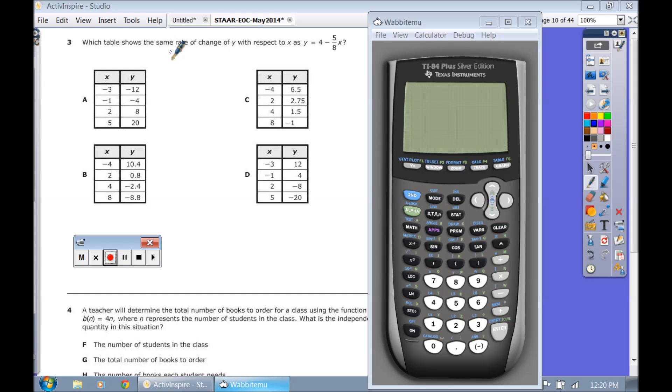This question was from the May 2014 Algebra 1 test. Question 3 was asking you which table shows the same rate of change or the slope, the same slope as the equation that they give us.